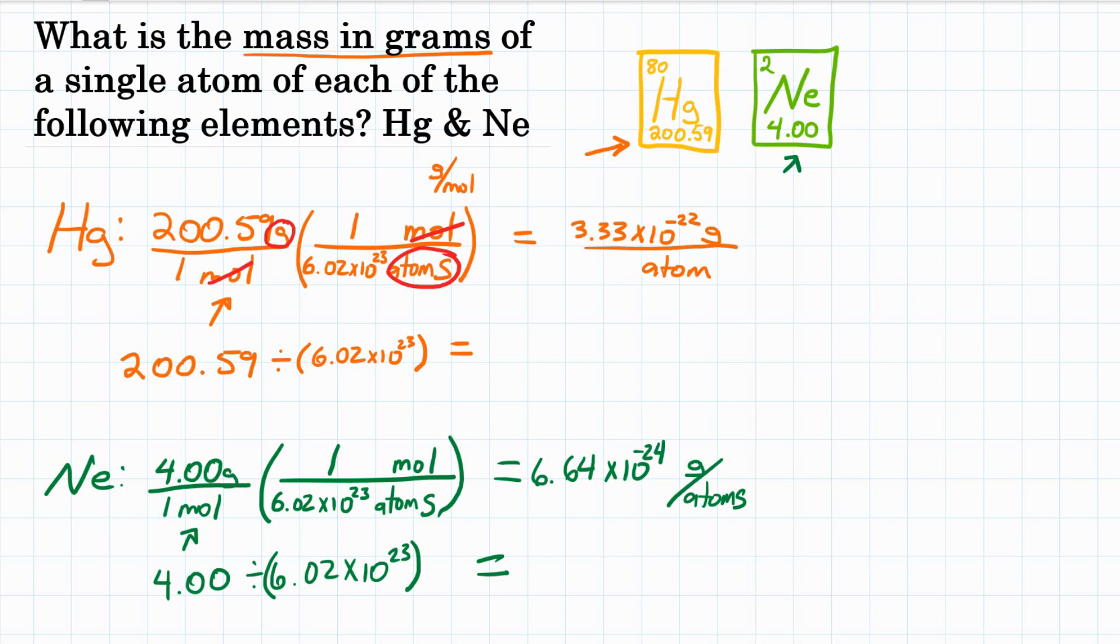So in the end, what is the mass in grams of a single atom of each of the following elements? Well, for mercury, 1 atom is 3.33 times 10 to the negative 22nd grams. And neon, for a single atom, is 6.64 times 10 to the negative 24th grams.